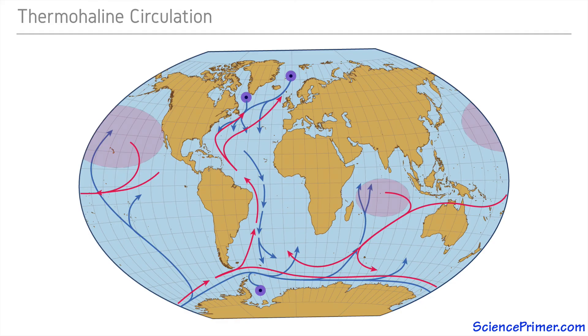This is called thermohaline circulation. It is also referred to as the ocean conveyor belt, and it is responsible for moving significant amounts of heat from the equator towards the poles.